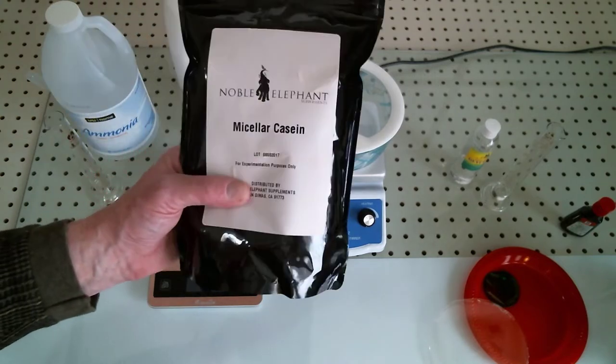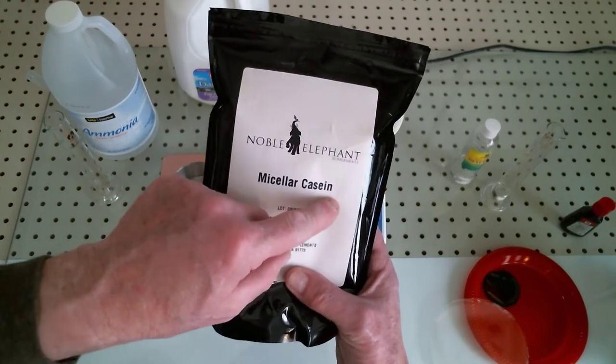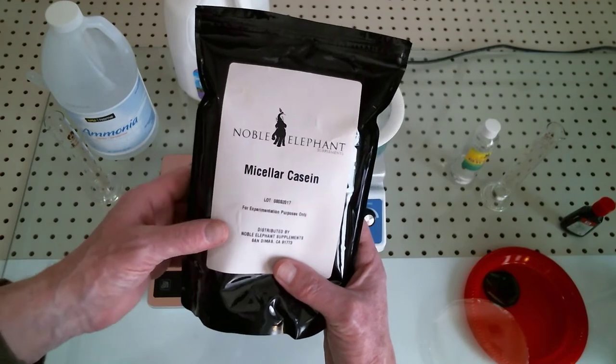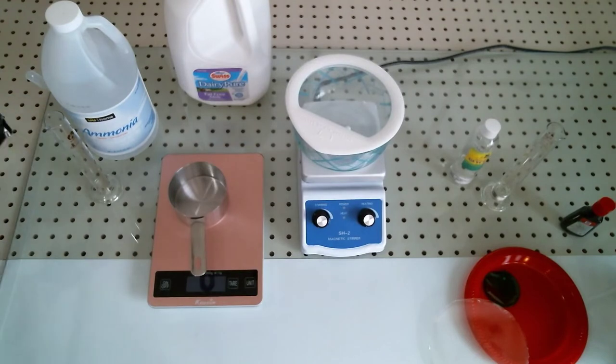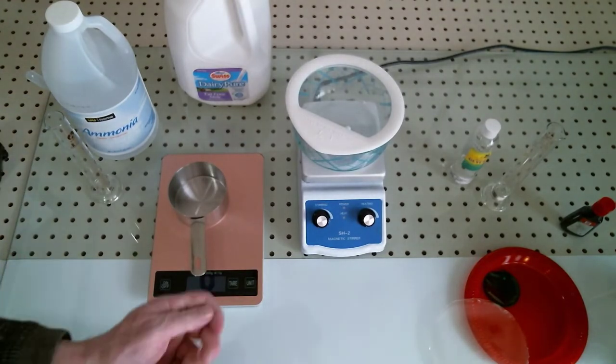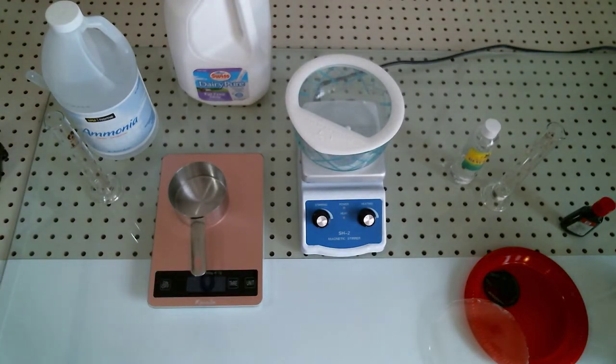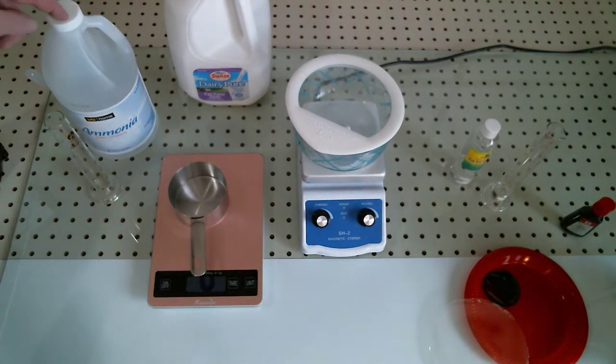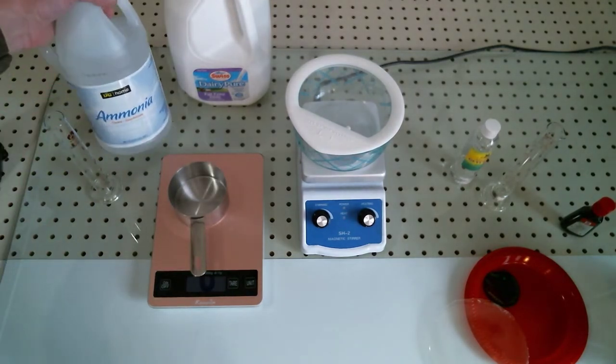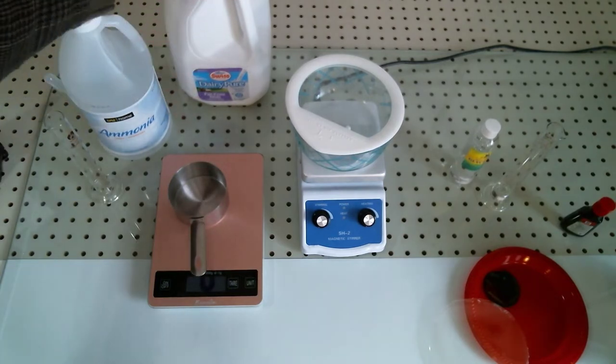What I like to do is to save a step and you can buy casein in a powdered form already. This is a bodybuilder supplement you can find online and it will save you some steps. We're also going to use ammonia, a strong alkali, and that's what's going to dissolve the casein into a clear film.